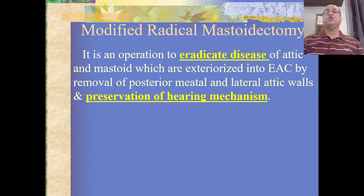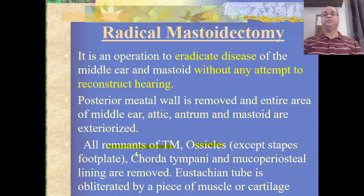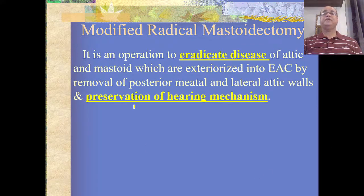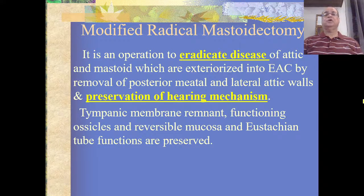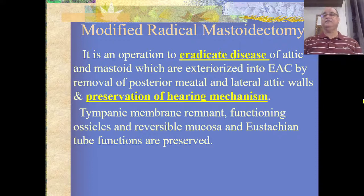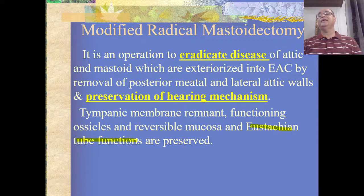In modified radical mastoidectomy, unlike radical mastoidectomy, hearing mechanism is preserved. Tympanic membrane remnants, functioning ossicles, and reversible mucosa are retained rather than removed. This is the key modification from classical radical mastoidectomy. Because these structures are retained with the goal of preserving hearing, the eustachian tube is not obliterated in modified radical mastoidectomy, as it is needed for reconstruction of the hearing mechanism at the time of surgery or in a second stage operation.